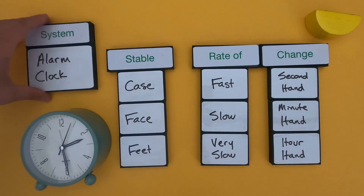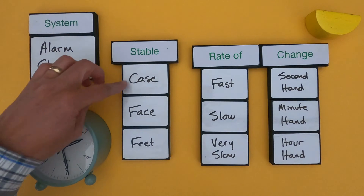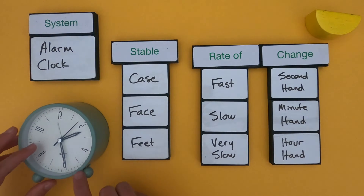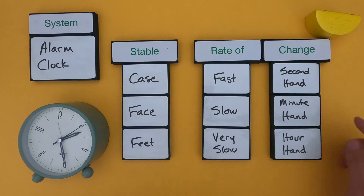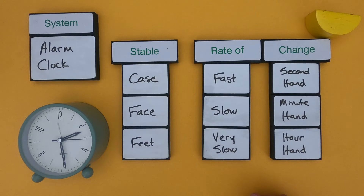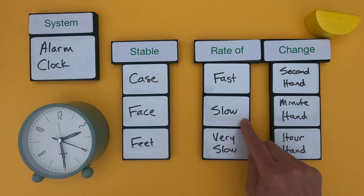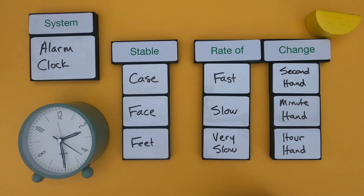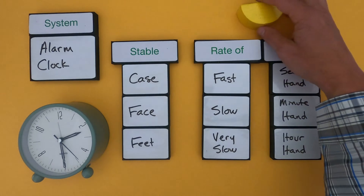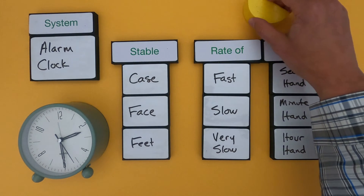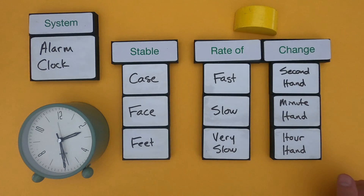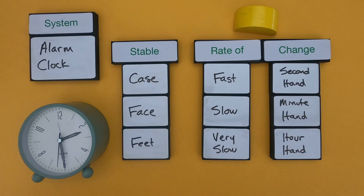Within the system of the alarm clock, we have parts that are stable, like the outside, the face, and the feet. We have things that change — the hands — from the second to the minute to the hour. The rate of change: the second hand moves relatively fast, the minute hand moves slower, and the hour hand moves very, very slow. So again, we're looking at things that change and things that remain stable over time.